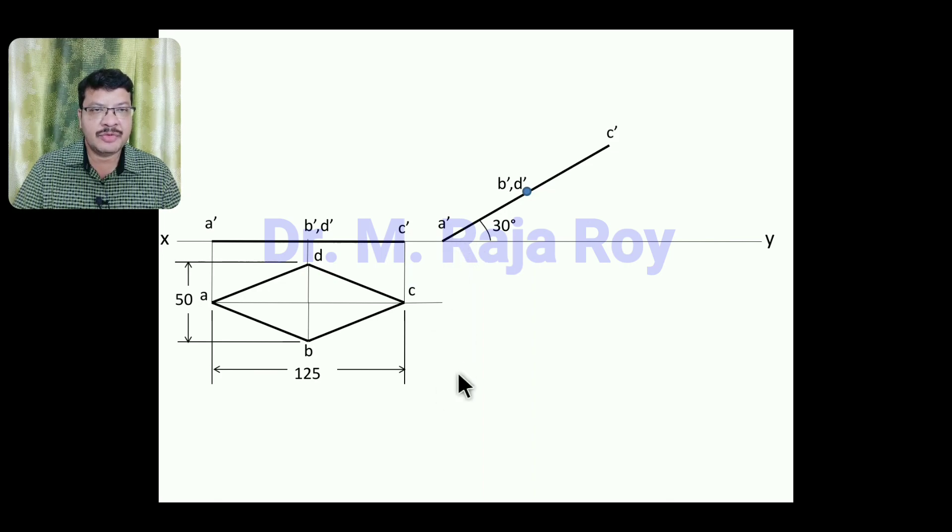Now draw the projectors from the front view, locus lines from the top view, like this. This is the projector. This is locus, here you will get A. This is the projector of B', D', this is the locus of B, here you will get B. This is the projector and locus for C. Then the reduced top view will be like this. This is the reduced top view.